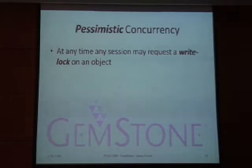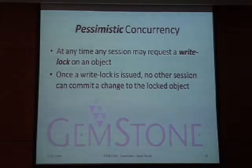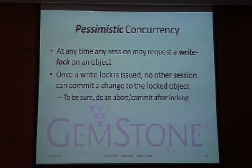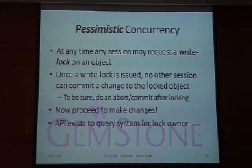With pessimistic concurrency, you want to make sure there won't be any conflicts. At any time, any session may request a write lock on an object. Once you obtain a write lock, no other session can commit a change to that locked object. After obtaining a lock you should do an abort or commit, then make your changes with confidence that there will be no commit conflicts — you will be successful modifying that object.